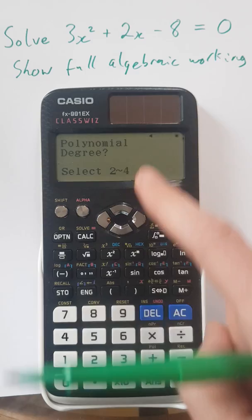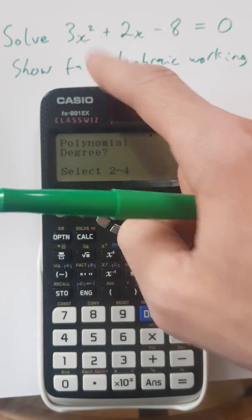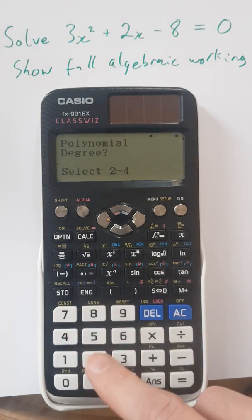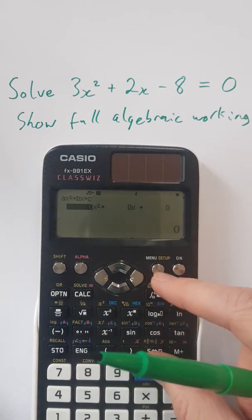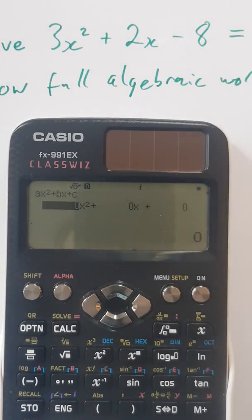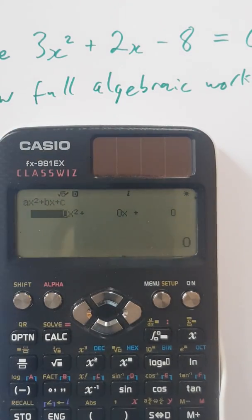It's degree 2 because the highest power on the x is a 2. So let's click on 2. And then it wants 3 values. So it just wants the number of x squared. So that's 3. 3 equals.